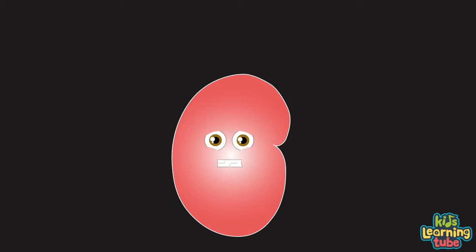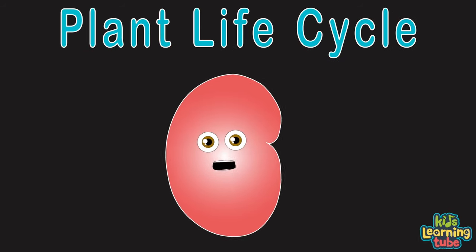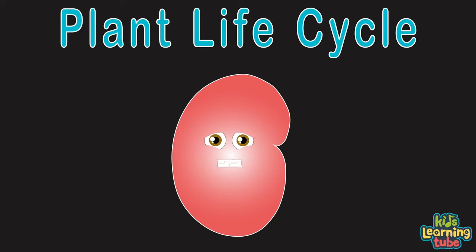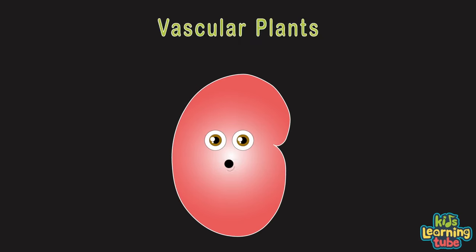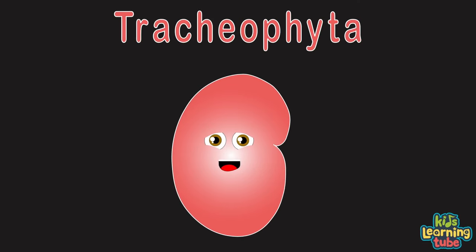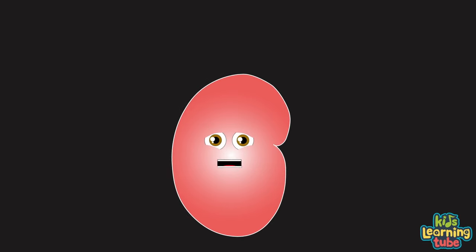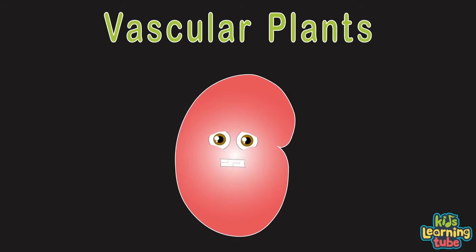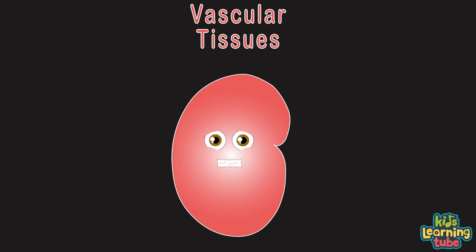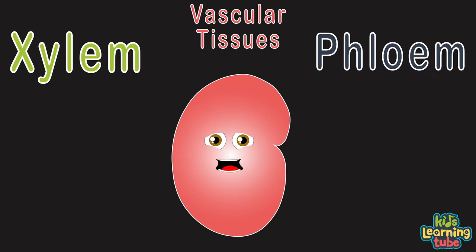This is a plant's life cycle brought to you by a seed. We'll learn about the distinct stages that any plant needs. Let's explore vascular plants, or tracheophyta. What's a vascular plant? Well, it's any plant that contains vascular tissue — xylem and phloem.